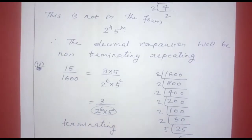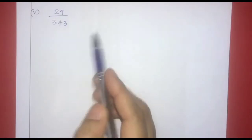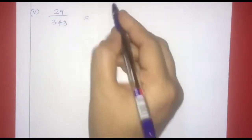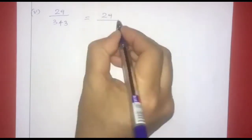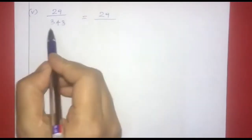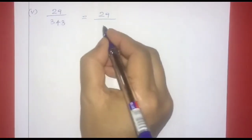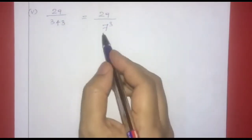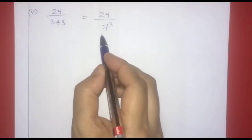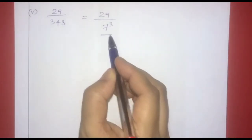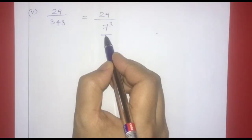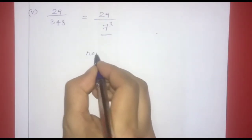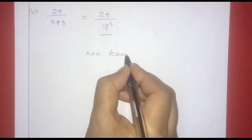Next one is 29 divided by 343. 29 is a prime number. 343 equals 7 raised to 3. Since the denominator is not of the form 2 raised to n into 5 raised to m, this is a non-terminating recurring decimal.